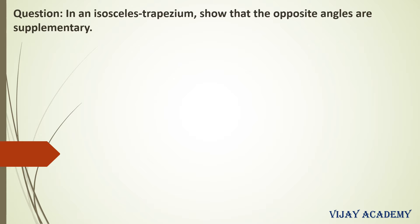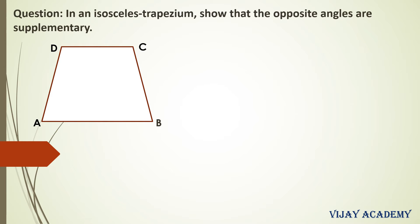As it is given in the question, in an isosceles trapezium, we are supposed to draw an isosceles trapezium. So let me draw an isosceles trapezium ABCD. After drawing the isosceles trapezium ABCD, we have to prove that the opposite angles of an isosceles trapezium are supplementary.